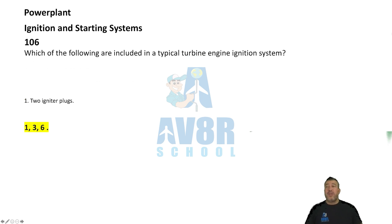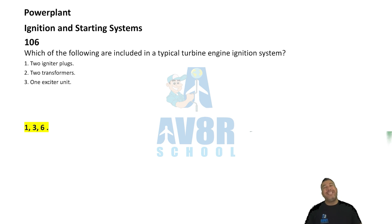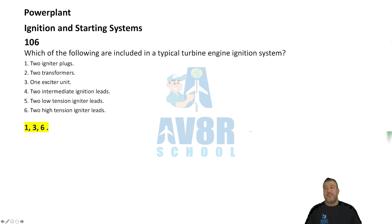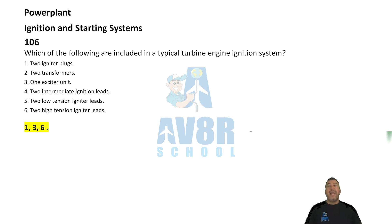Number 106. The answer is 1, 3, and 6. Which of the following are included in a typical turbine engine ignition system? You have two igniter plugs, one exciter unit, and two high tension igniter leads. Those are the three units in a typical turbine engine ignition system: the igniter plugs, the exciter unit, and the leads. Answer: 1, 3, and 6.